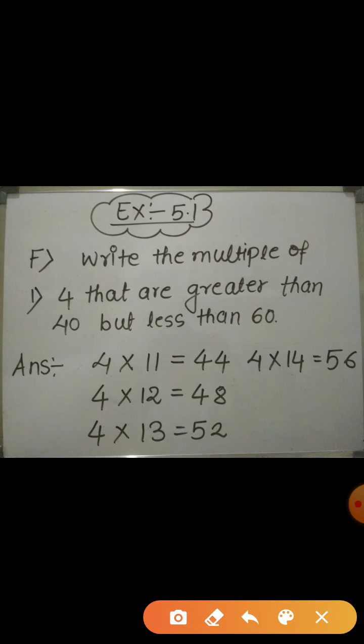Write the multiple of 4 that are greater than 40 but less than 60. Now let us understand first, when we will get the multiple 40 of 4? When we multiply 4 by 10, we will get the multiple 40, right? 4 tens are 40.